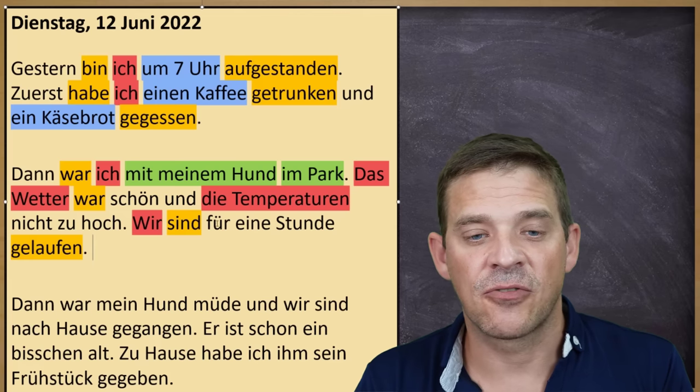Er ist schon ein bisschen alt. Er ist der Hund — that's also a pronoun, he. So he is the subject. Er ist schon ein bisschen alt. Ist ist das Verb im Präsent — present tense, because he is still alive, so therefore he is already a little bit old. Alt ist das Adjektiv.